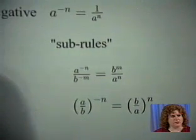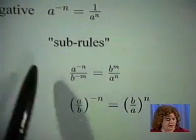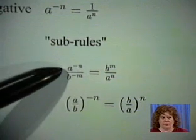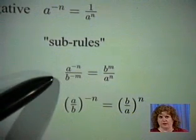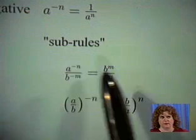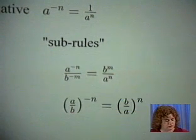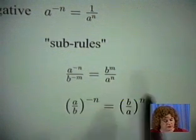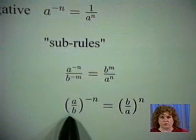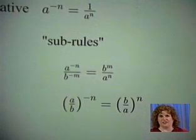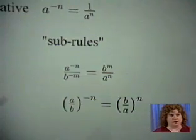Some handy sub-rules that go with that. If we have a negative power in the numerator and in the denominator, they're both going to cross the line to the other side, and you end up with positive powers. And if you have a quotient raised to a negative power, you just flip it over and change the sign on the power.